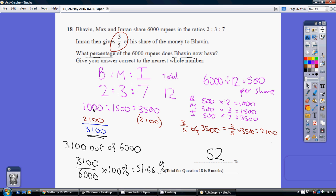Max, who's got three shares, is going to get three lots of 500, which is 1500. And Imran, who's got seven shares, is going to get seven lots of 500, which is 3500.